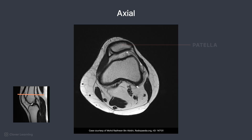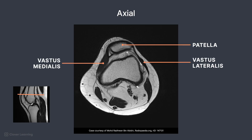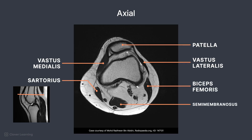Moving inferiorly, the patella is located anteriorly. Important muscles seen include the vastus lateralis, vastus medialis, sartorius, biceps femoris, and semimembranosus. Popliteal vessels are located posterior to the femur.